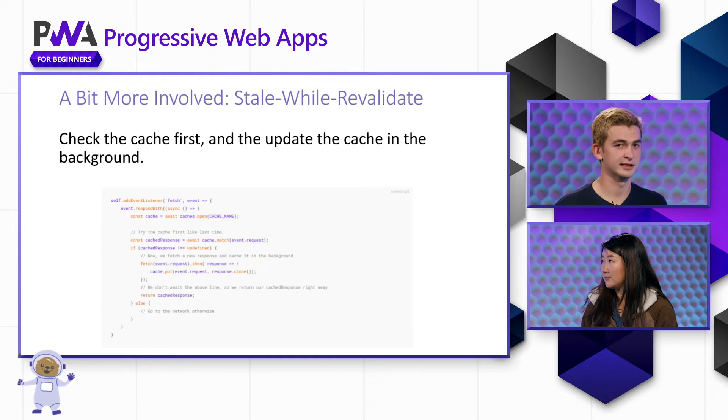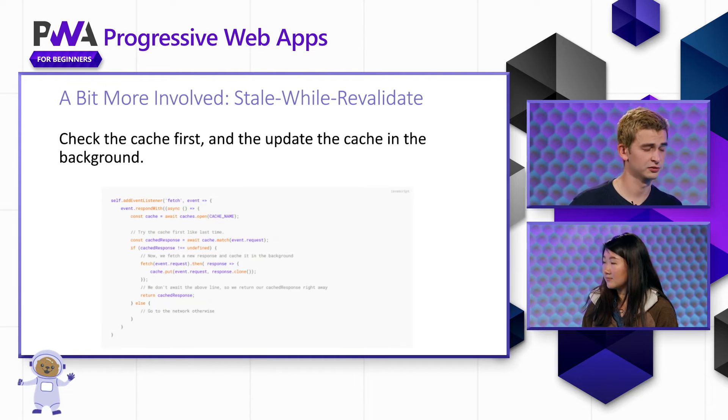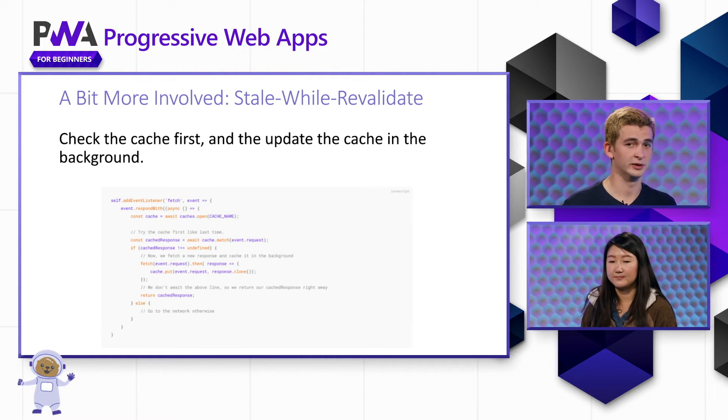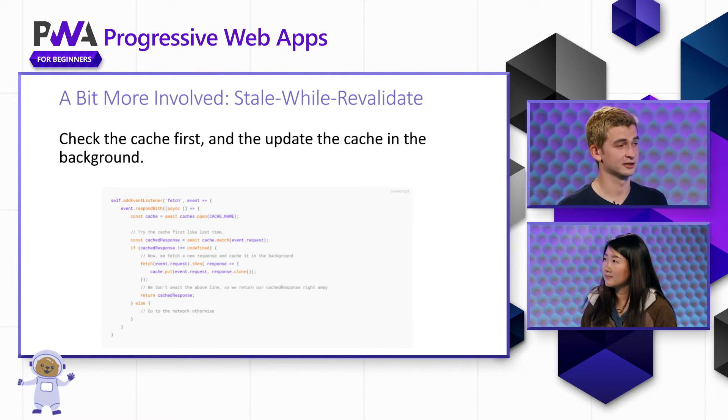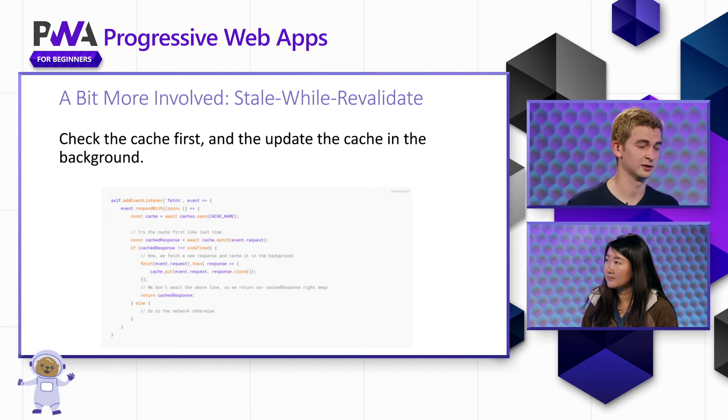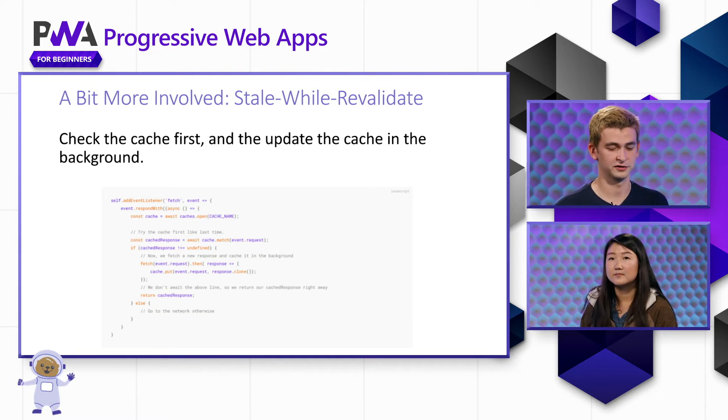With just a little more complexity, we can improve to a more balanced approach. We can use a strategy called stale-while-revalidate, which is a popular and relatively straightforward way to handle fetch events.